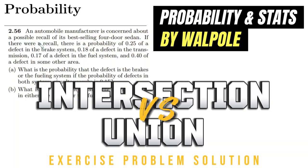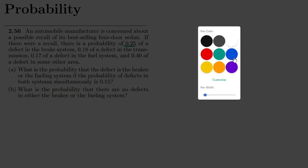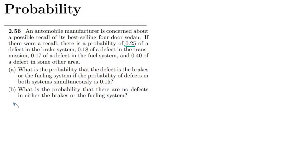Hello guys, this is question 2.57. The statement is: an automobile manufacturer is concerned about a possible recall of its best-selling four-door sedan. If there were a recall, there is a probability of 0.5 of a defect in the brake system. Let me write the given data here. There is a 0.25 probability of a defect in the brake system, so let me write it as TB, and that is 0.25.